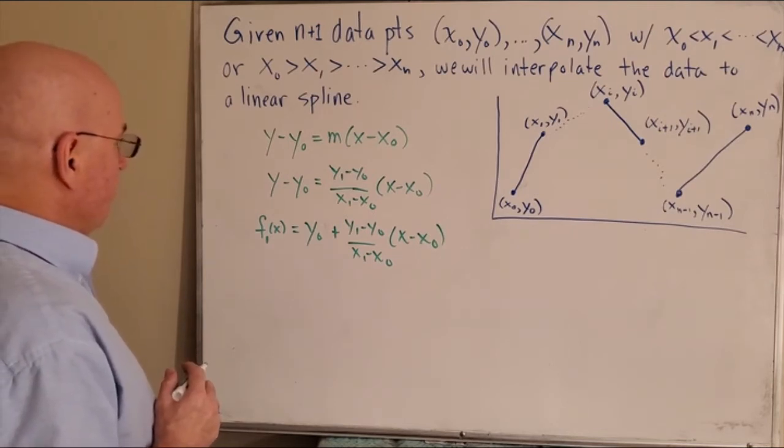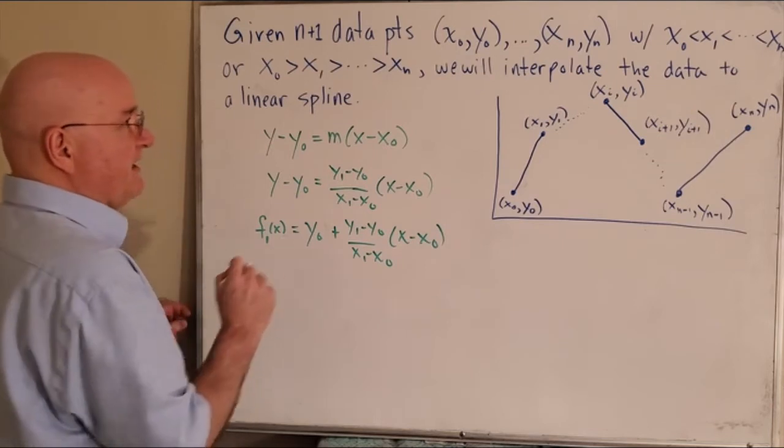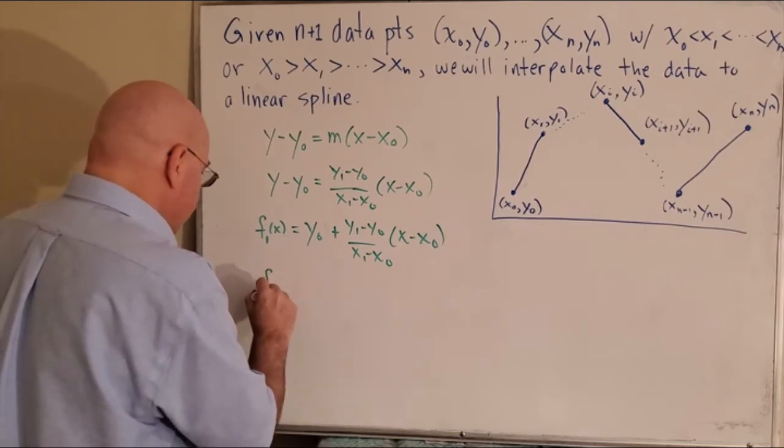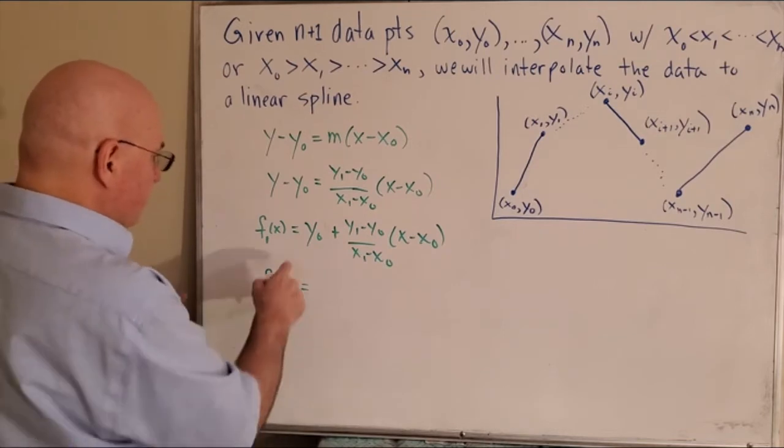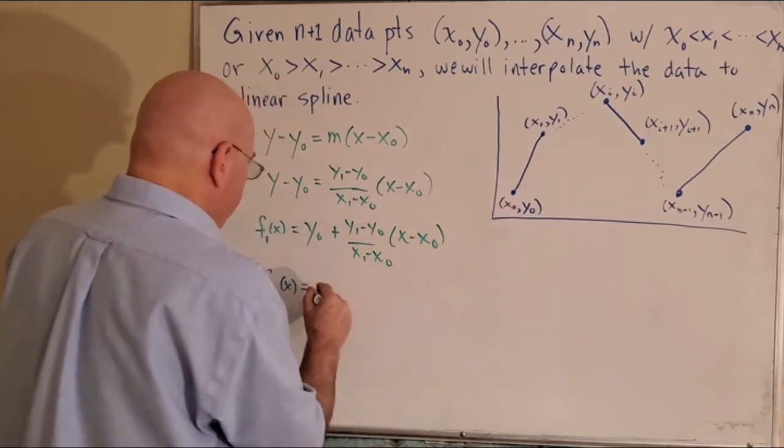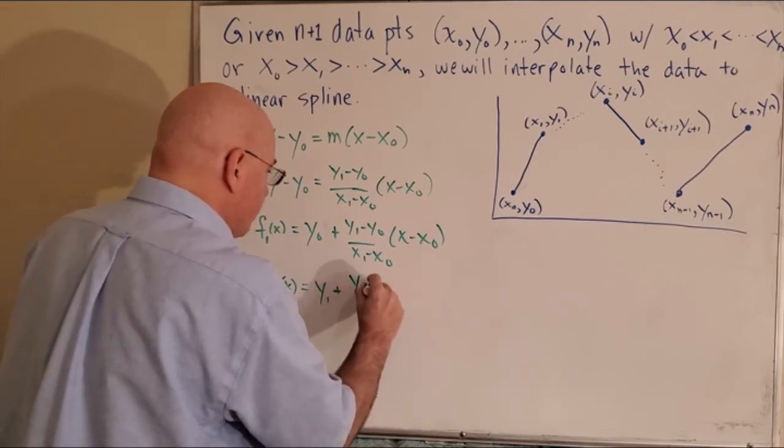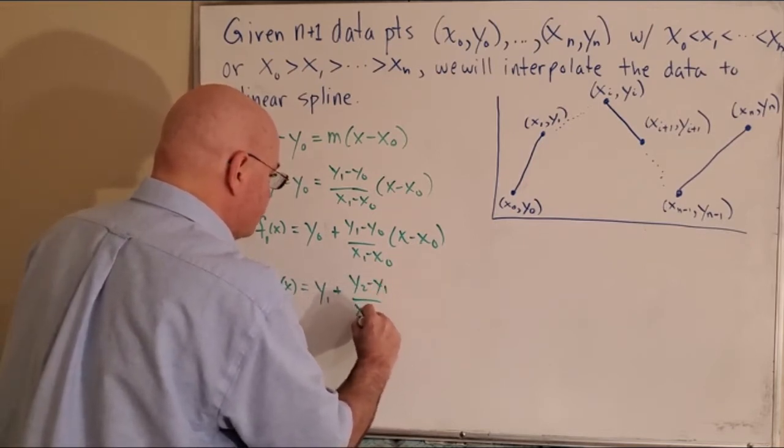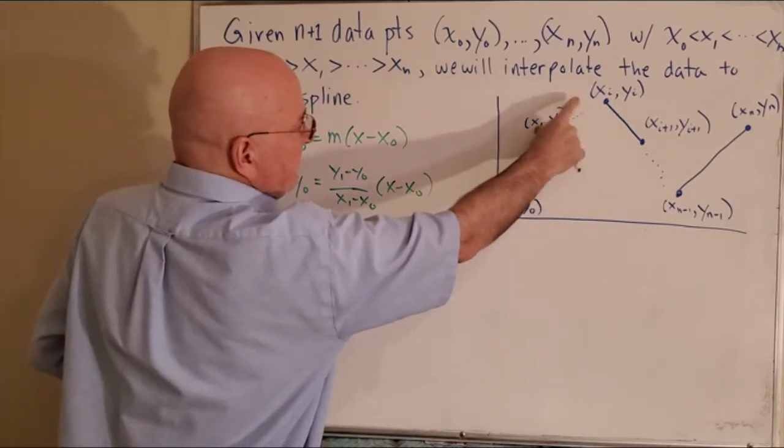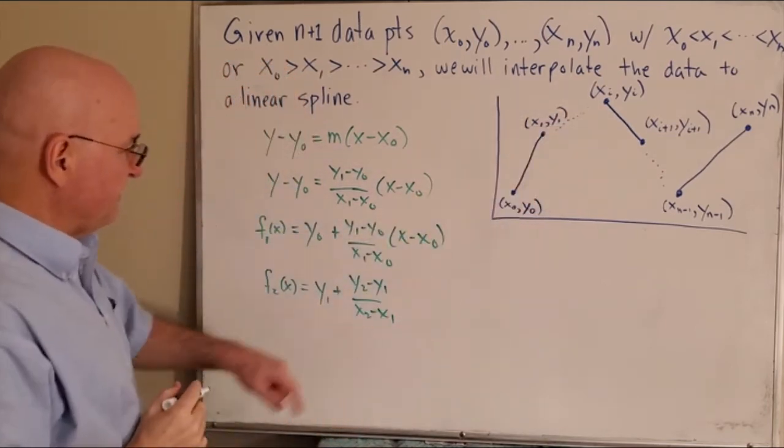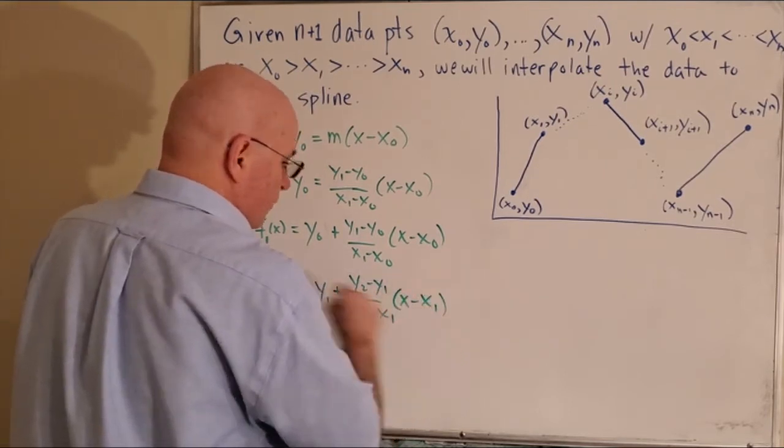Okay, so for example, let's actually, before we write it down generally, let's write down f2. f2 of x would be, would start at y1 plus y2 minus y1 over x2 minus x1. That's the, that would be the second segment wherever it is, the slope of the second segment, x minus x1.